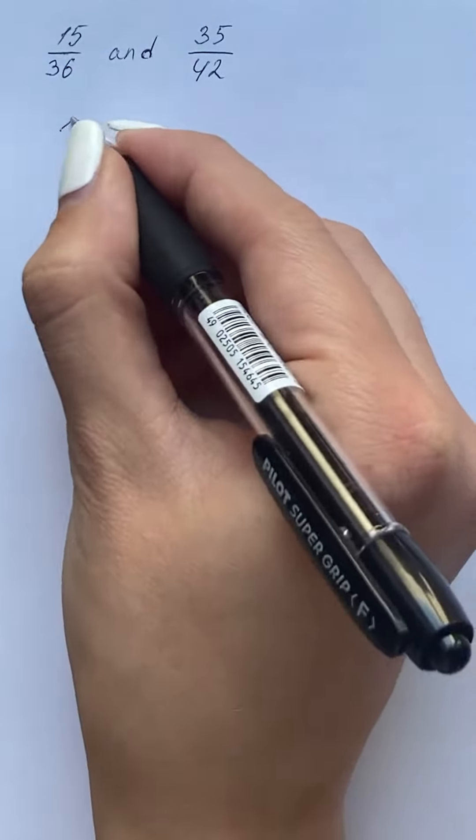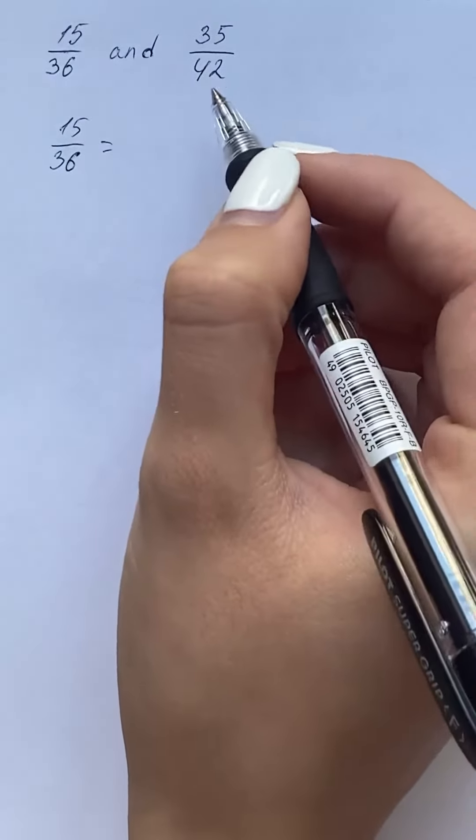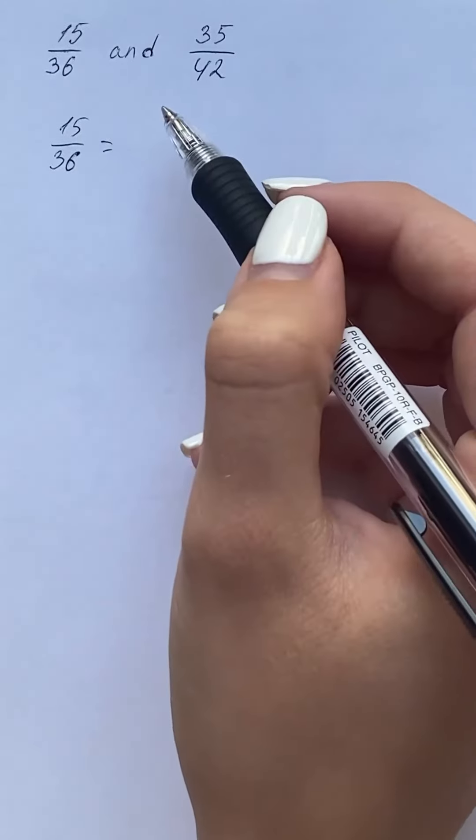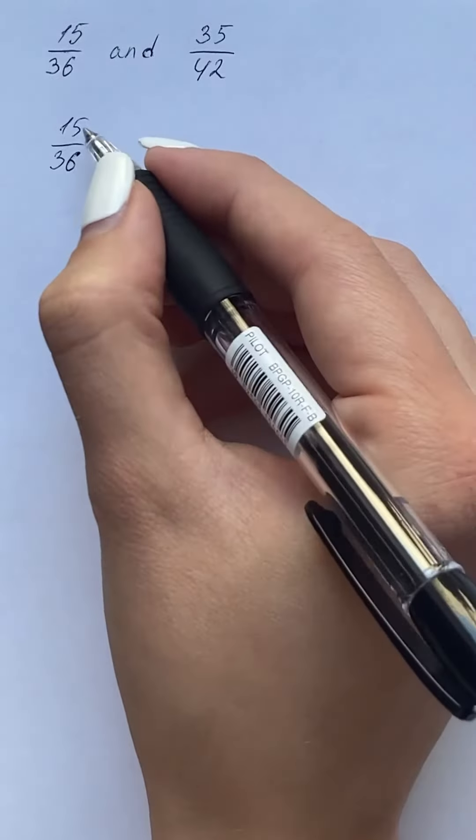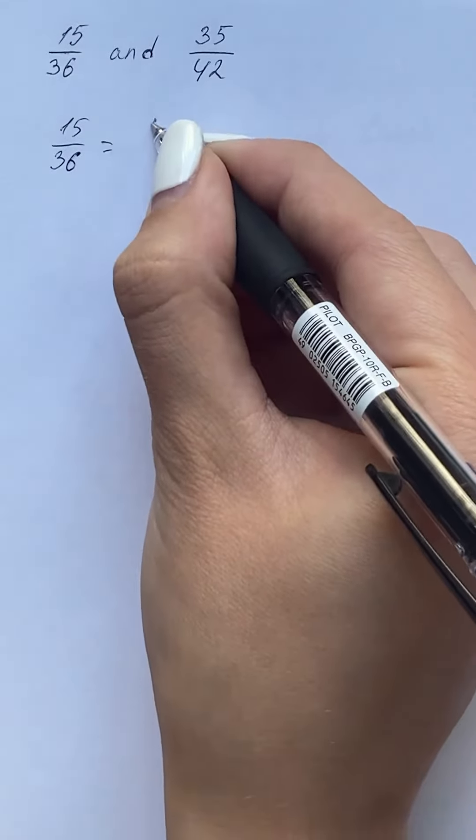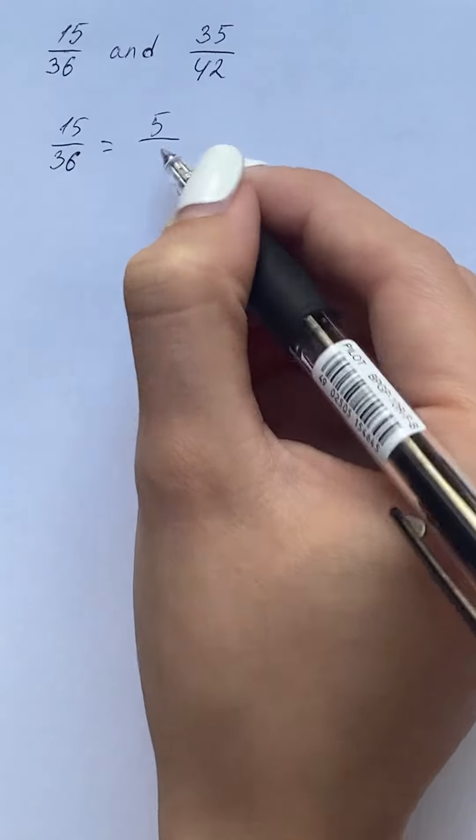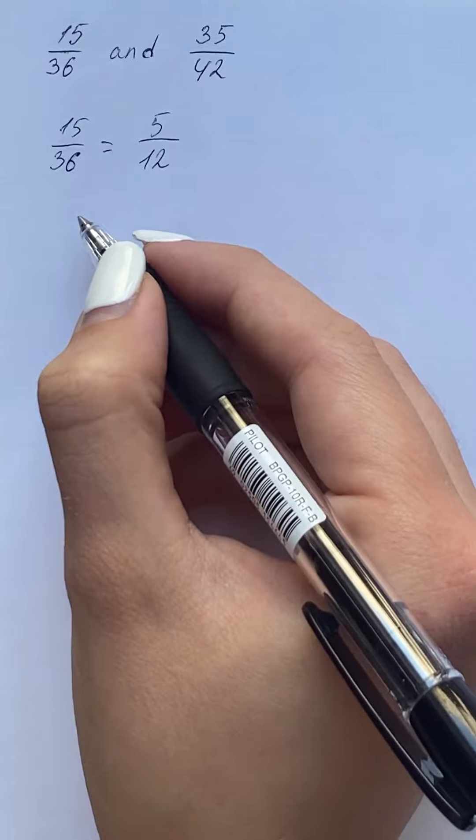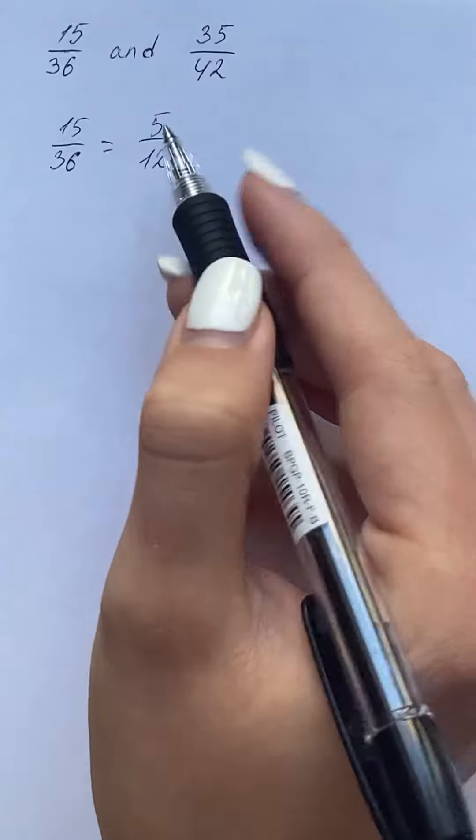The first fraction is 15 over 36. The highest common factor of numerator and denominator is 3, and after that there is no other common factor. So we're going to divide the numerator by 3 and get 5, and the denominator divided by 3 to get 12. This is the simplified form of the first fraction.